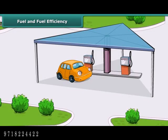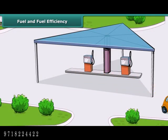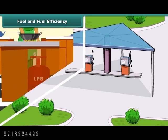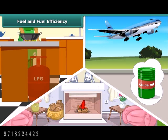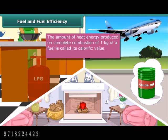Fuels are an important source of energy. We use petrol or diesel for driving cars, LPG for cooking food, crude oil for flying airplanes, and wood to provide warmth. All these are fuels. All fuels do not burn efficiently. Fuel efficiency is determined by its calorific value — the amount of heat energy produced on complete combustion of 1 kg of a fuel — expressed in kilojoules per kg.